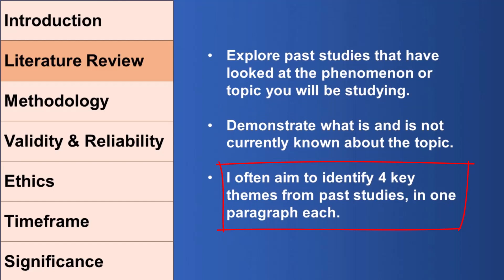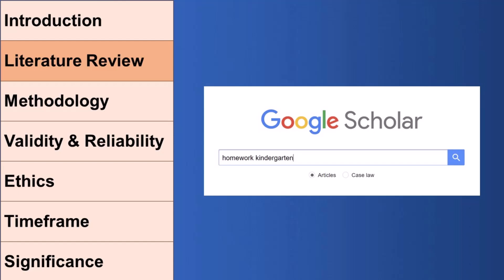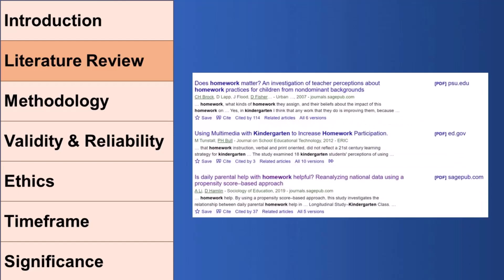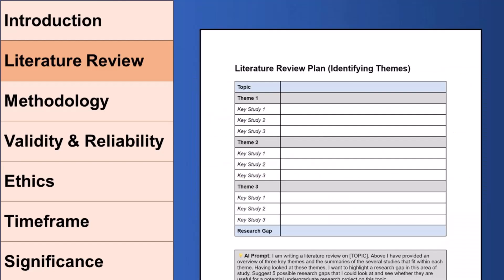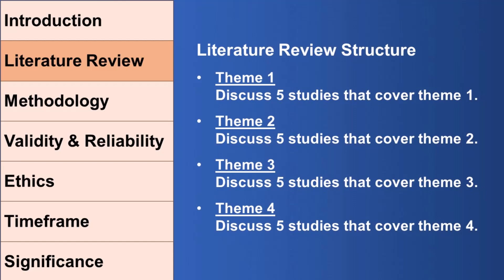If you're an undergrad, you might only be expected to do a paragraph or two for each theme, whereas if you're a master's student, you might be expected to do a more detailed overview. A quick guide here: you're likely going to want to go to Google Scholar or your university's online database to find studies. You'll search, open the PDFs, read them, sort the information into a series of themes, and then discuss each theme and what the studies say under each theme section.